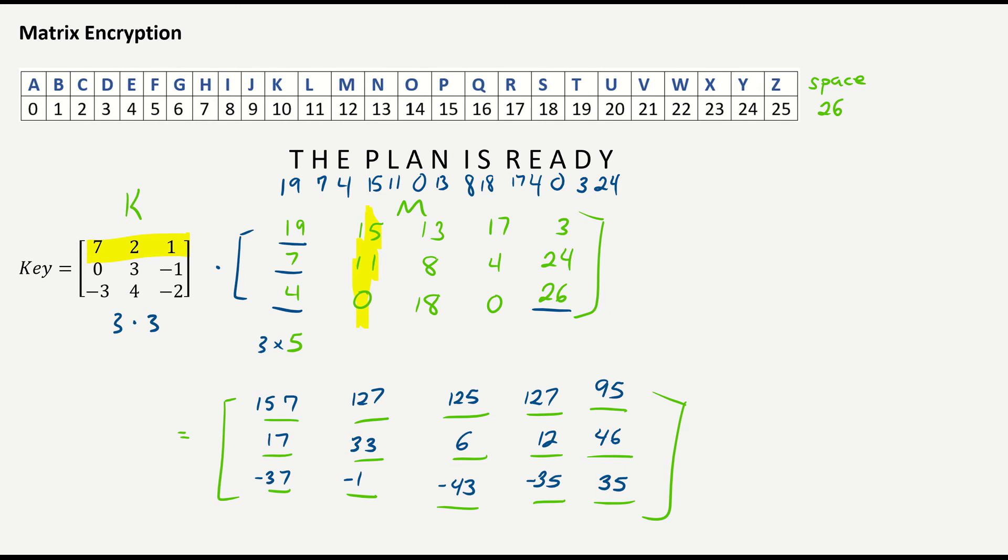Okay, great. So I have found my numbers. I have to multiply them. And this gives me the encrypted matrix. So we have the key times the message matrix gives the encrypted matrix. So you would send that off to your recipient, the encrypted one.